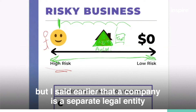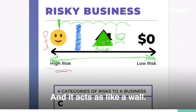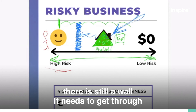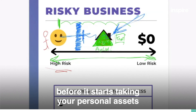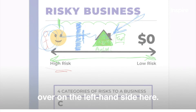a company is a separate legal entity, and in uni I learned this concept called the corporate veil — it acts like a wall. So if a missile is shot at your business, there is still a wall that needs to get through before it starts taking your personal assets over on the left hand side here.